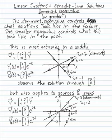In the case of a linear system where I have two straight-line solutions, there's a concept that one of the solutions is dominant over the other, or I have a dominant eigenvalue. This dominant eigenvalue, really the greater eigenvalue, controls what solutions look like in the future. The smaller eigenvalue controls what the solutions look like in the past.